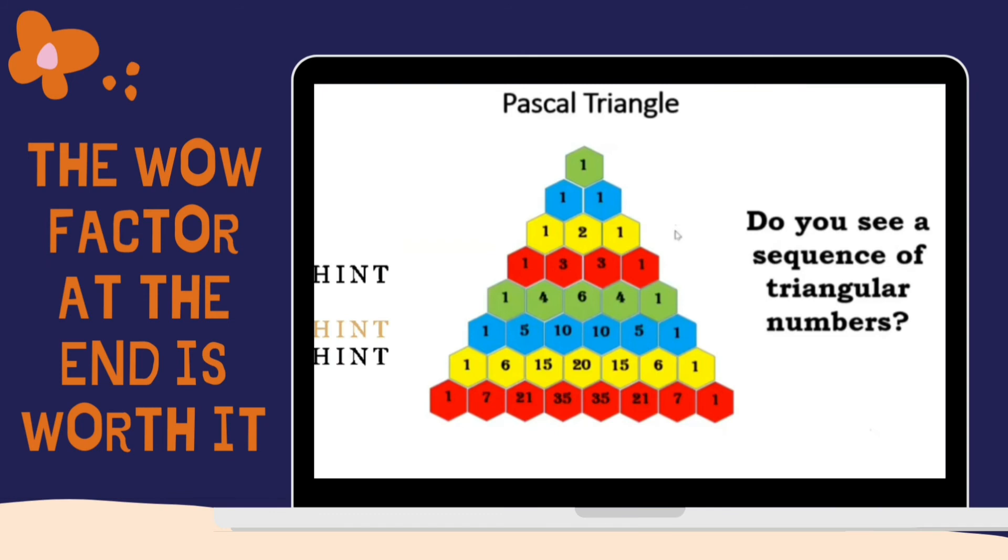The number of hexagons in this Pascal triangle. How many hexagons can you see in this picture? Anyone? It's six. It's six, right?